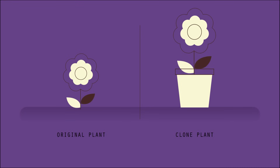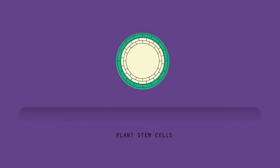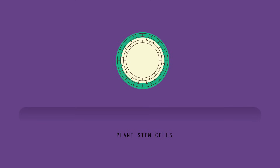The method works because the shoots of the plant contain stem cells, which are able to differentiate to form different cells and tissues.